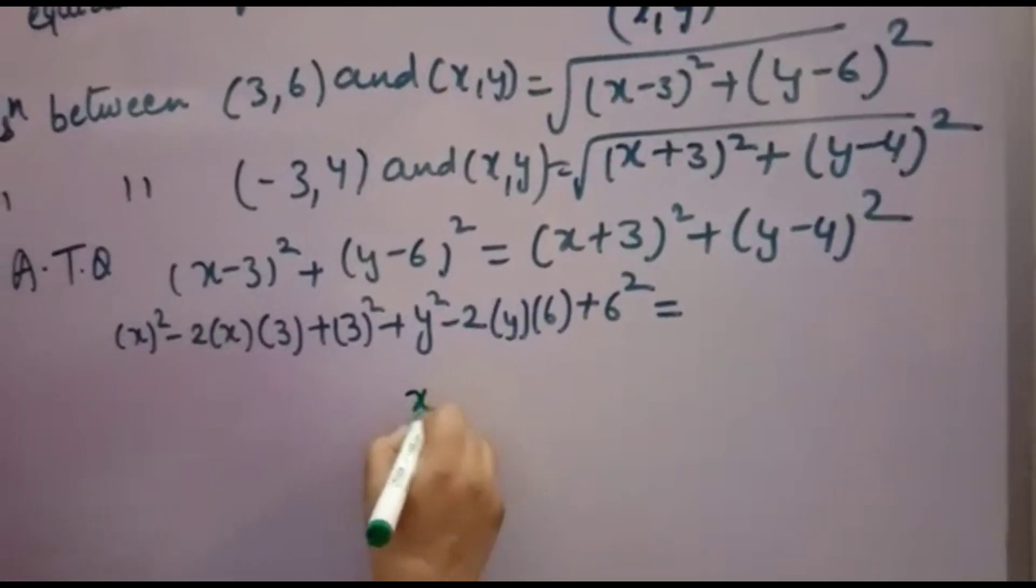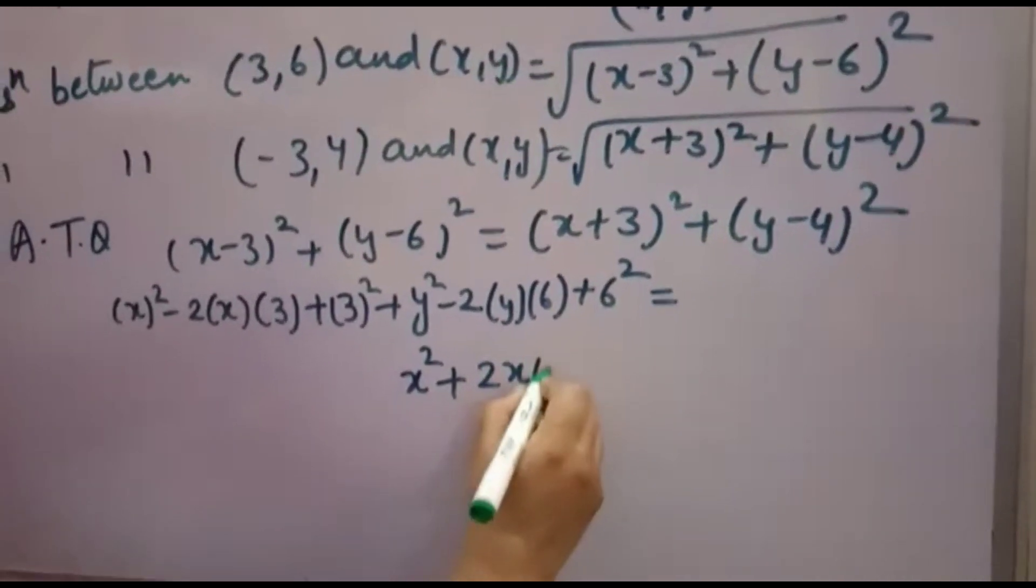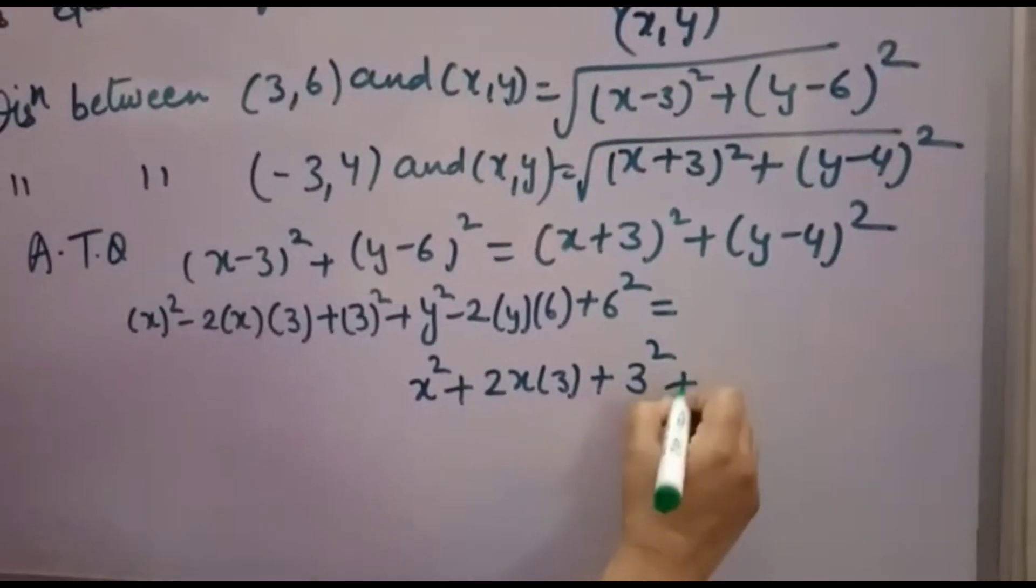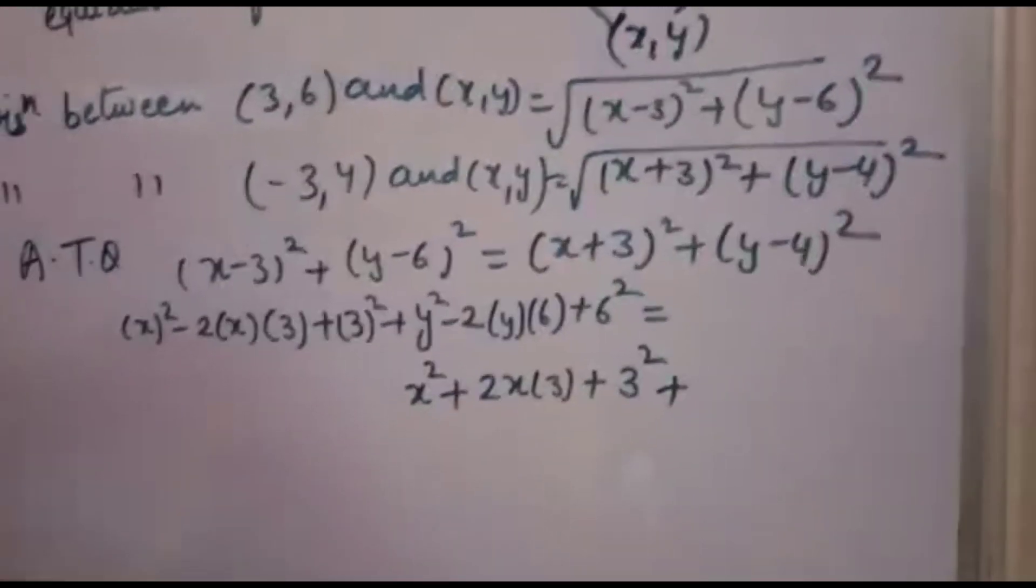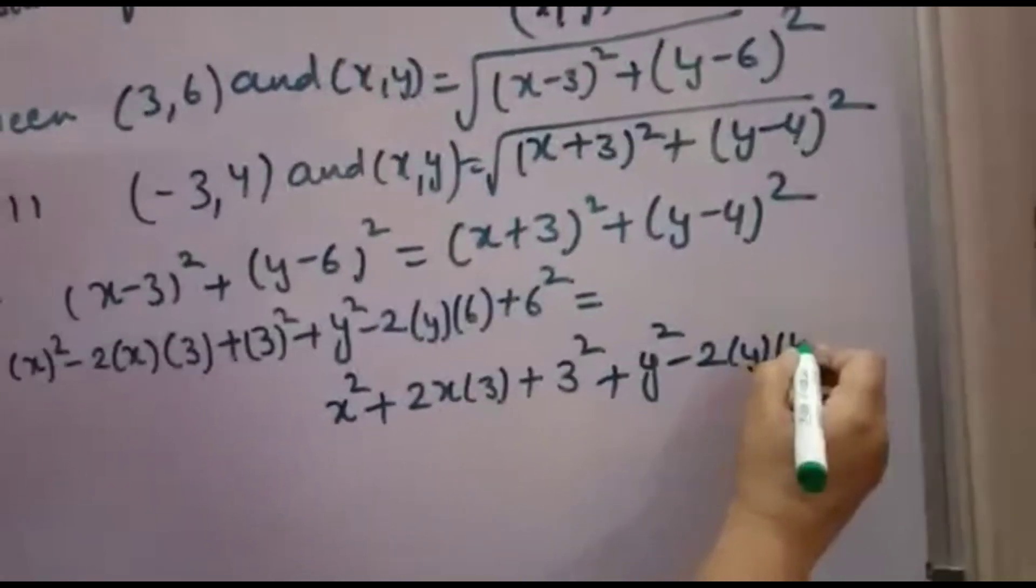This I am writing here: (X plus 3) whole square is X² plus 2 times X times 3 plus 3², plus (Y minus 4) whole square, which means Y² minus 2 times Y times 4 plus 4².